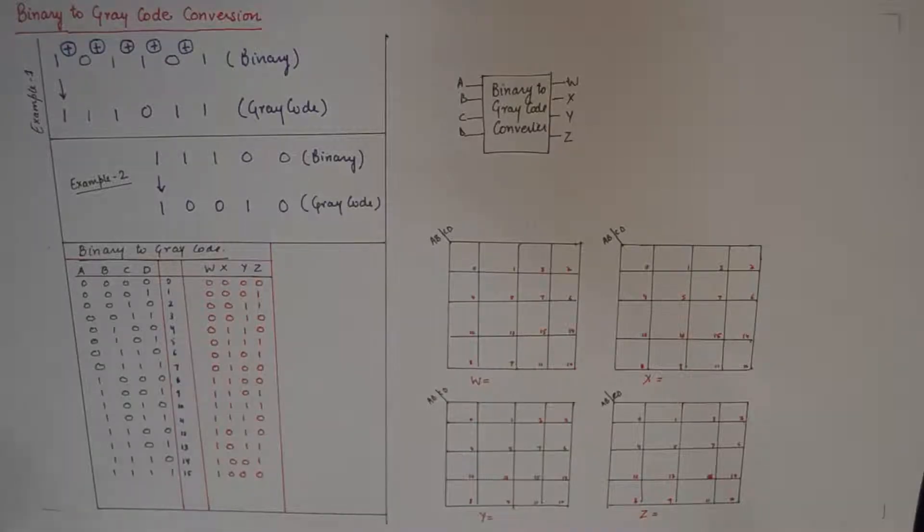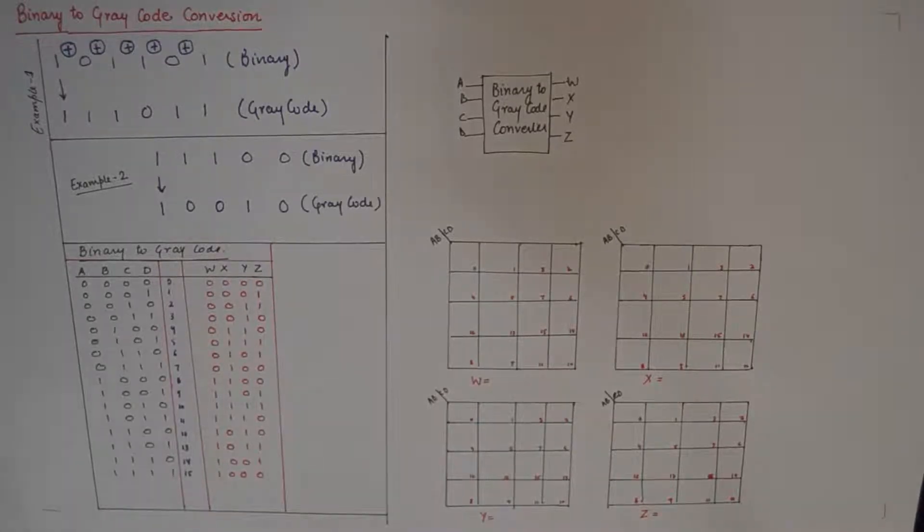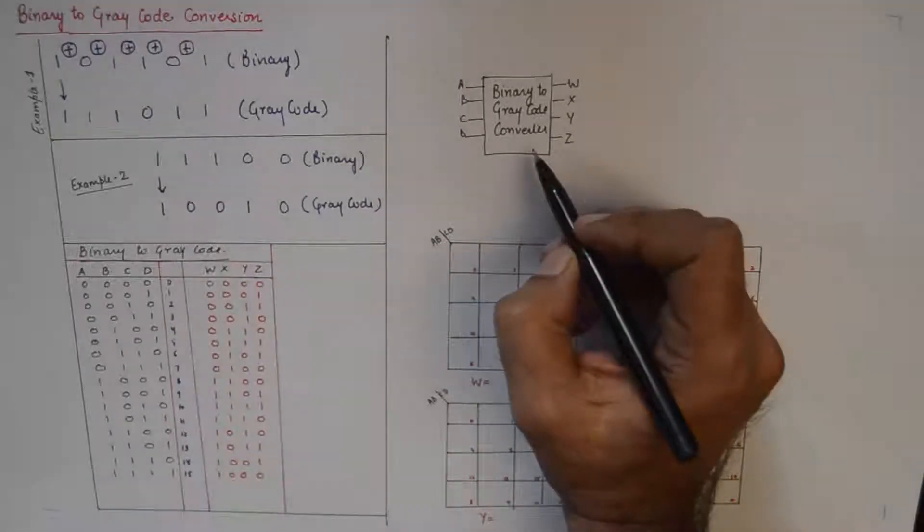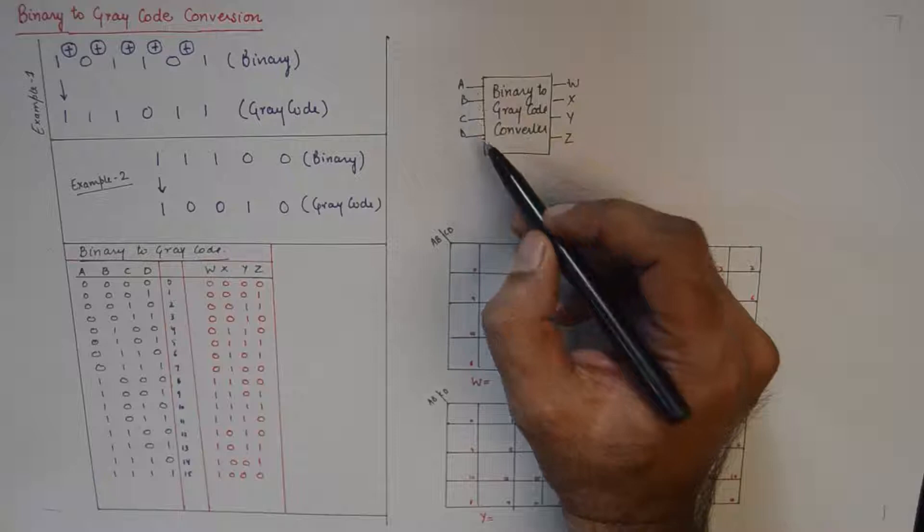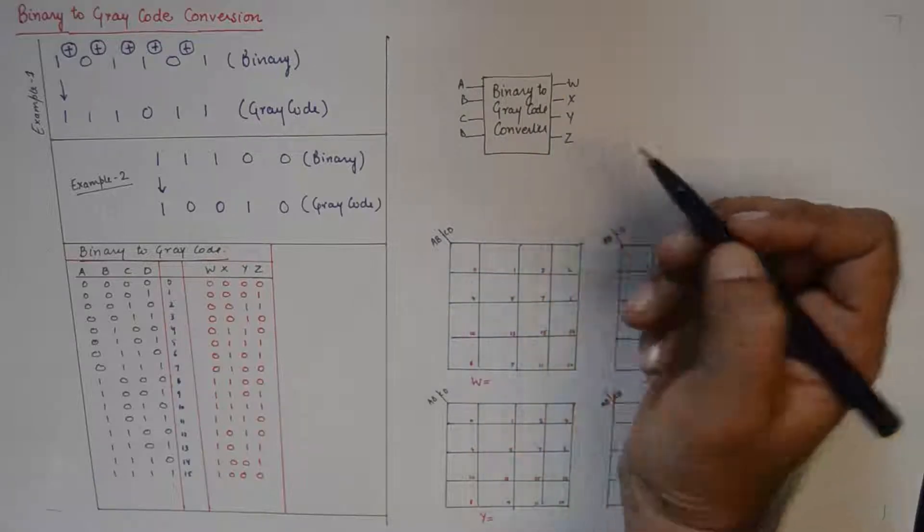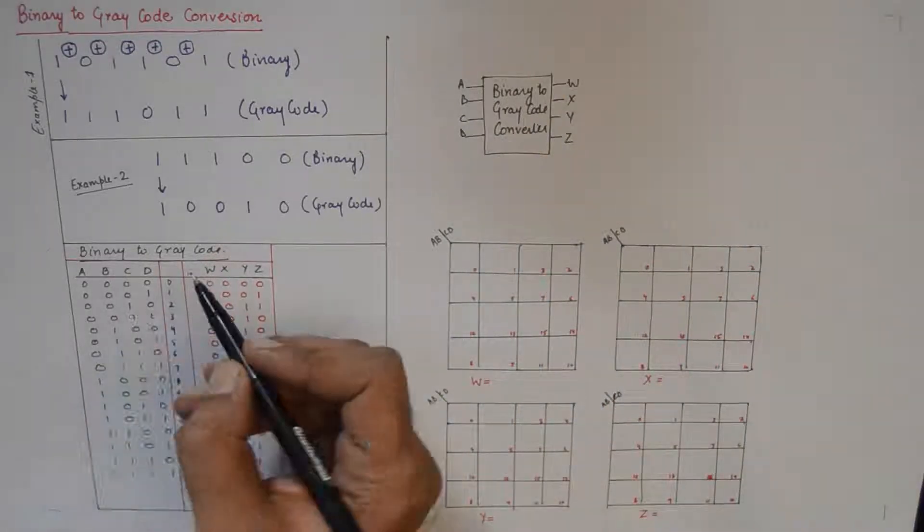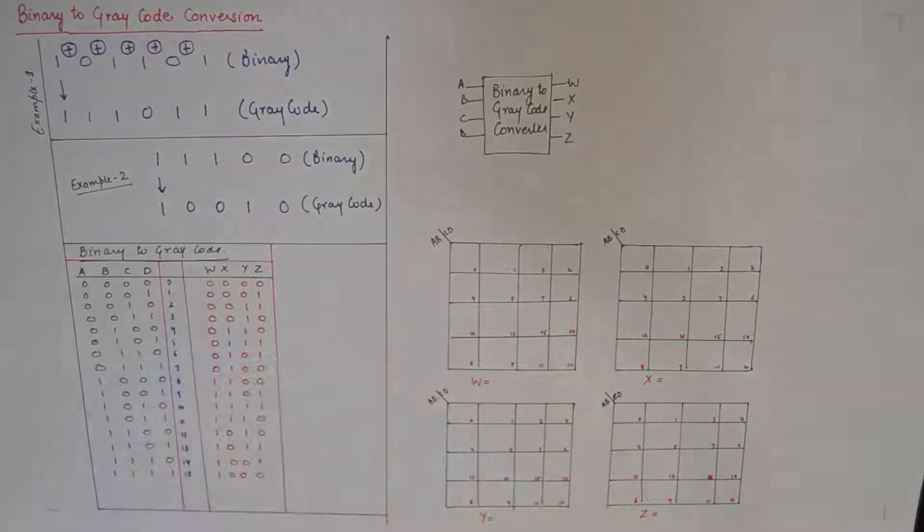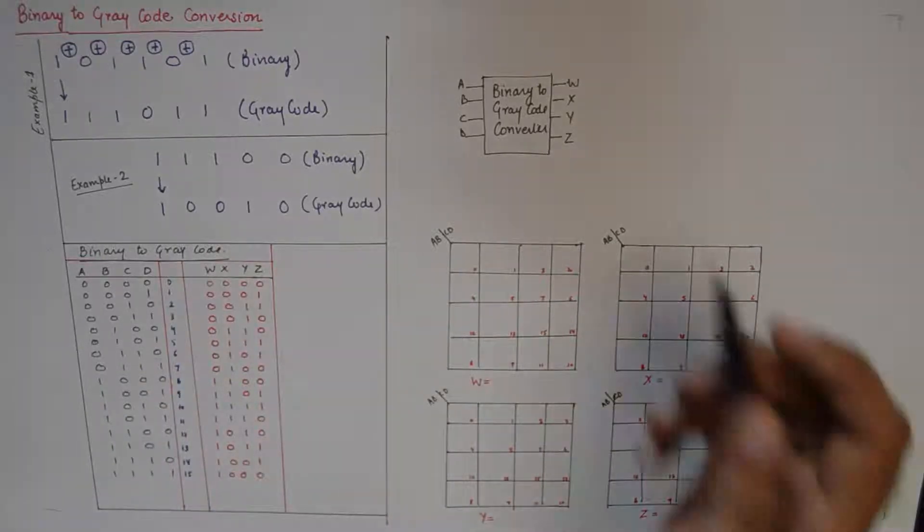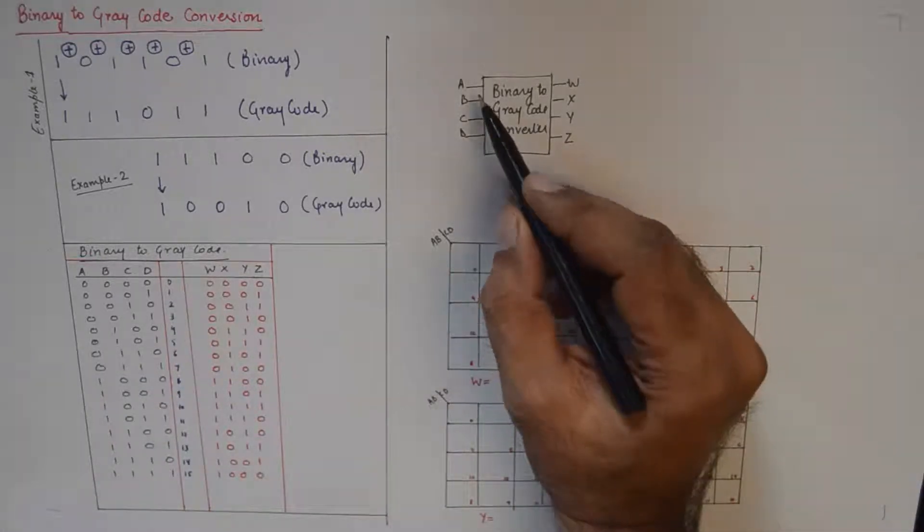Hello internet, welcome to another tutorial in the series of digital electronics. Today we'll discuss binary to gray code converter. It's going to be a logic device that has four inputs and four outputs. We are making a binary to gray code converter for four bits, so it is going to perform the task of converting binary input into its equivalent gray code.